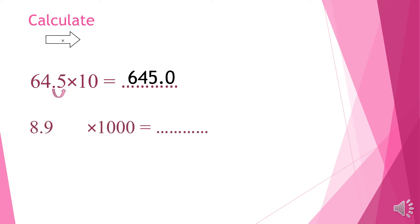Another example: 8.9 times 1000. I will move the point three steps to the right side. Let's move it three steps: one, two, three. Excellent. I have two empty places, so I will put two zeros. I get 8900.0.